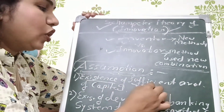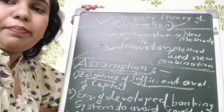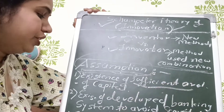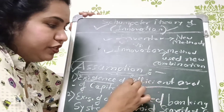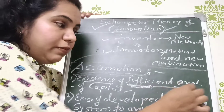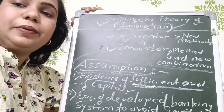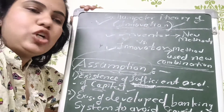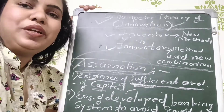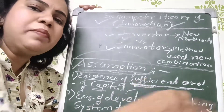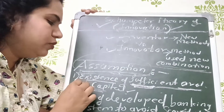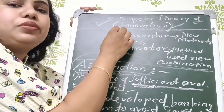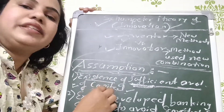The first assumption Schumpeter gave is the existence of sufficient availability of capital. If a manufacturer has enough capital available for production, then innovation is possible. If your company has no fund or capital, you cannot manufacture anything new — you'll keep producing the same product for 10 years. So sufficient capital is required for innovation, because finance is obviously needed.